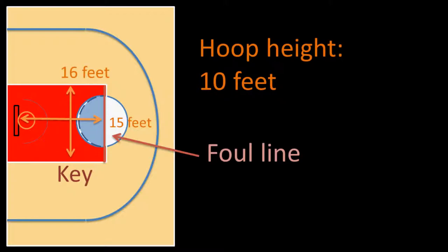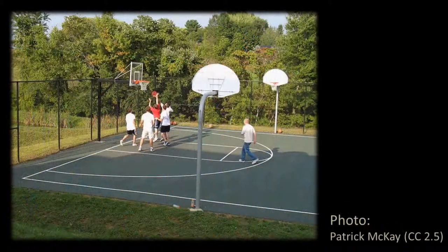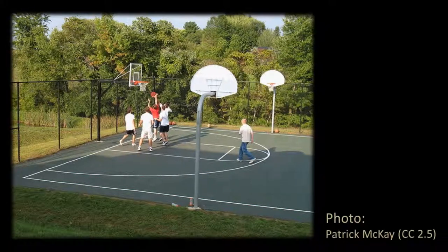Now that we know the dimensions, you can see what a real court would look like here during an NBA game in a big fancy arena. Likewise, you can see how the court is set up the same way on a playground. Even though maybe not every line on the NBA court is present, the important ones — the foul line, the three-point line — are all there. And that's how a basketball court is laid out.